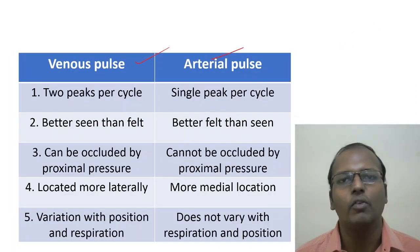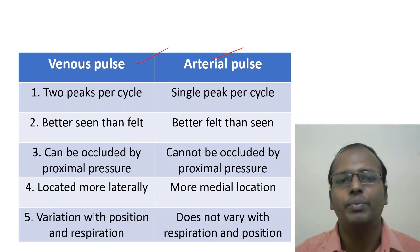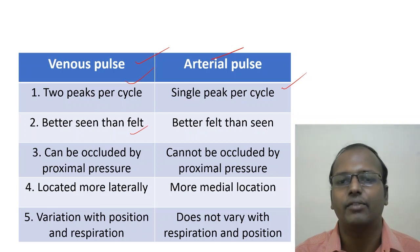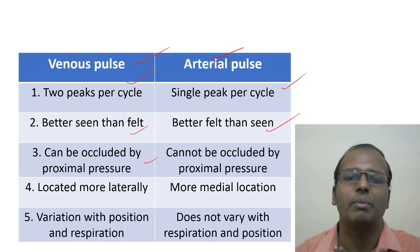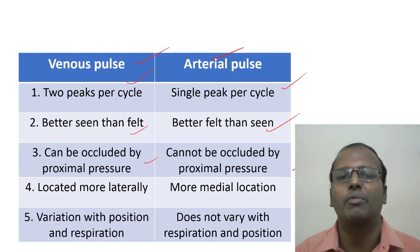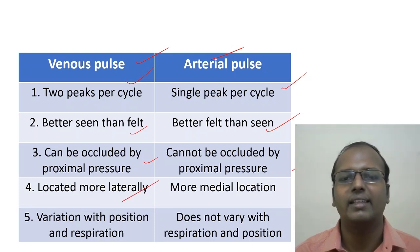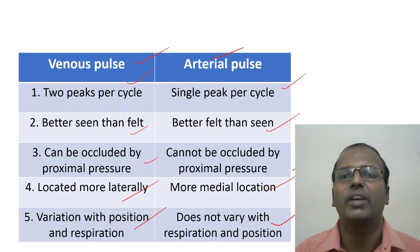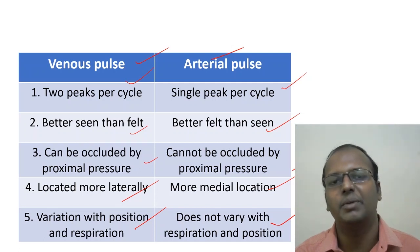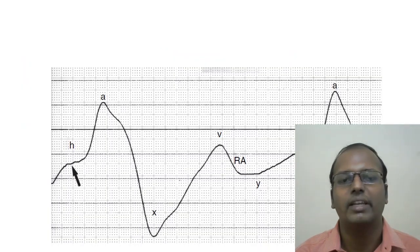Differences between JVP and carotid pulse: JVP has two peaks per cycle (a and v waves), better seen than felt, easily occluded by proximal pressure, located more medially, and varies with position and respiration. Carotid pulse has a single peak per cycle, better felt than seen, cannot be occluded by proximal pressure, located more laterally, and does not vary with position or respiration.